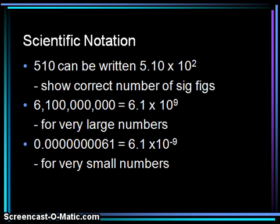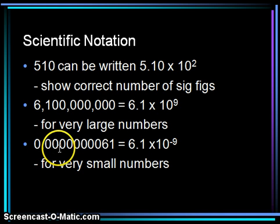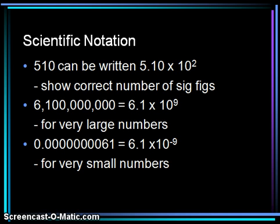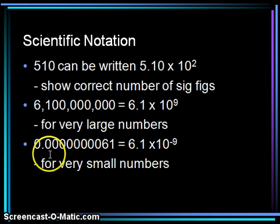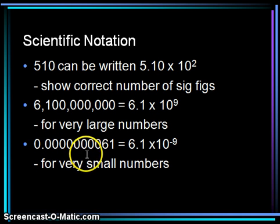We may also use scientific notation to show very small numbers. The number 0.000000000061 can be written more easily as 6.1 times 10 to the negative 9. A very small number means we will have a negative exponent. We figure out the exponent by counting how many places we move the decimal — in this case, 9 places.